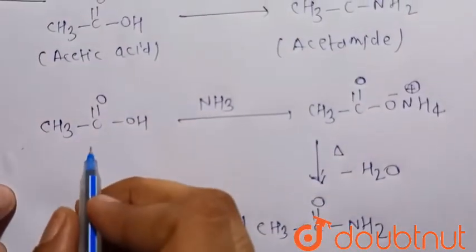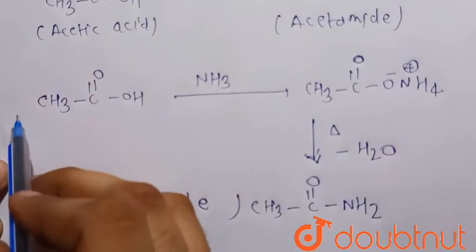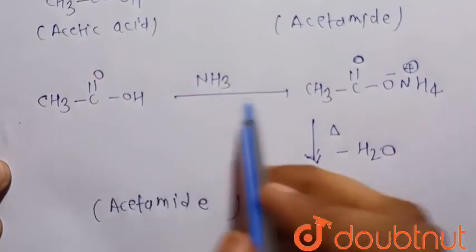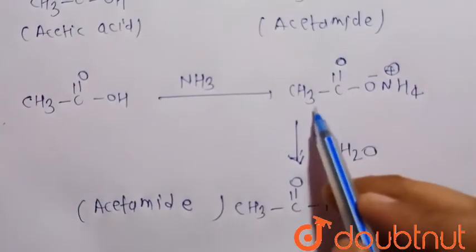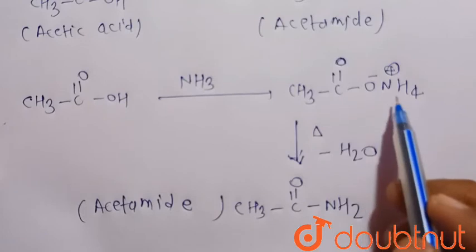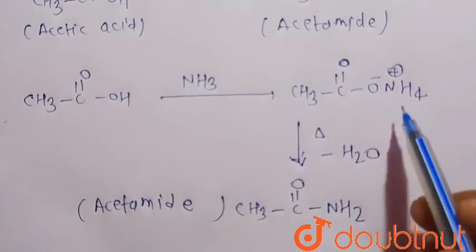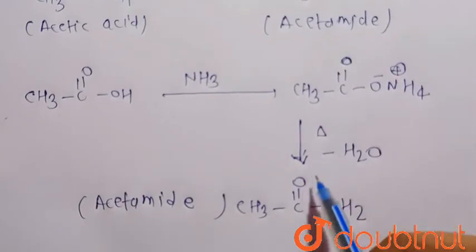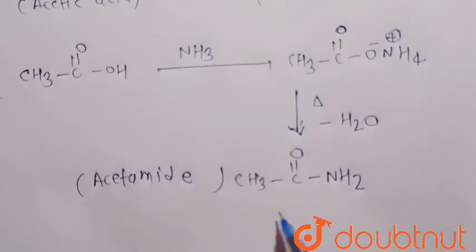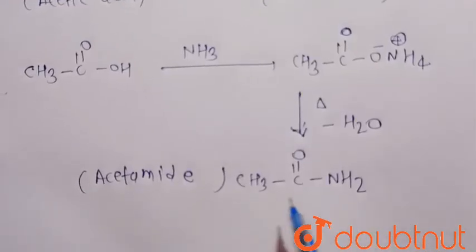So acetic acid can be converted into acetamide in a two-step process. First, it reacts with ammonia, forming CH₃C(=O)O⁻ NH₄⁺, that is ammonium acetate. When ammonium acetate is heated, there is a removal of water molecules, and finally there is the formation of acetamide, that is CH₃C(=O)NH₂.